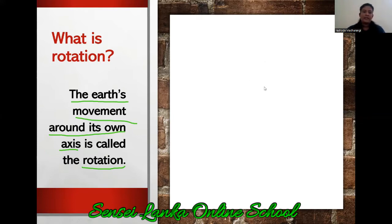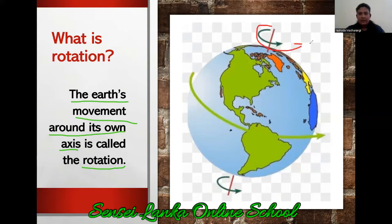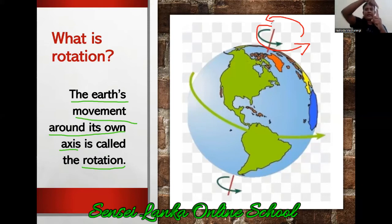Now look at this picture. Can you see it? Look at the picture and then look at the green color arrows in the picture. Can you see how it is rotating? Just like this, it is rotating.